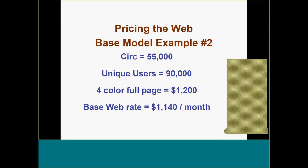For example: if your circulation is 55,000 and your unique users are 90,000, and a full-page ad costs $1,200, your base web rate should be somewhere around $1,100 — pretty darn close. 'Oh Ryan, you're crazy — nobody would pay that.' The reason they're not paying it is because you're not demanding it. Or you've been giving it away for free so long that you need to use the base model example and grow from there. For new advertisers, start quoting a higher rate. Old advertisers may never pay that rate — in most cases you'll lose them.